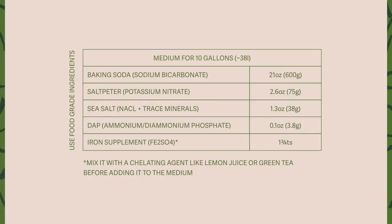Here's a recommended recipe if you feel like playing chemist. You'll find all the links to get these ingredients online in the course description. For 10 gallons of water, you'll need 600 grams of baking soda, 75 grams of salt bitter, 38 grams of sea salt, 3.8 grams of DAP, which stands for ammonium phosphate or diammonium phosphate, 1 and 3 fourths of a tablespoon of iron supplements. You want it to get ready and bioavailable, so this will be mixed with a chelating agent like lemon juice or green tea before introducing it to the medium. And that's it for the medium.